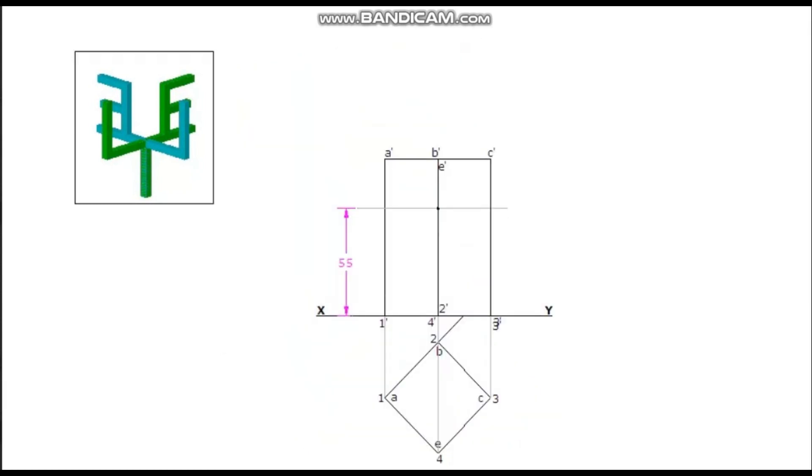In this case since the base edges are equally inclined to VP, this axis line also is in the same position where 4th and 2nd edge are drawn. Mark 55 mm from the base. Then draw the cutting plane, 60 degree inclined to HP. It can be noticed that the cutting plane is passing through the top base.